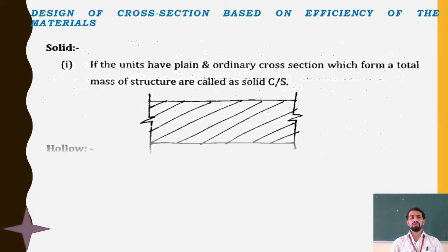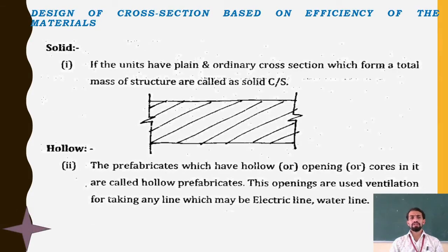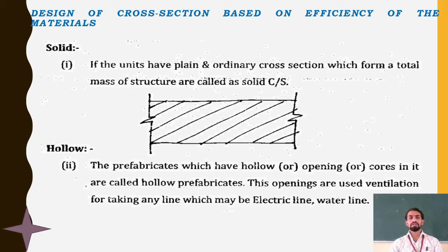For solid sections: units which have a plain and ordinary solid cross-section forming the total mass of a structure are called solid cross-sections. Only one particular material is used, and that material can be easily used for the particular part of prefabrication.